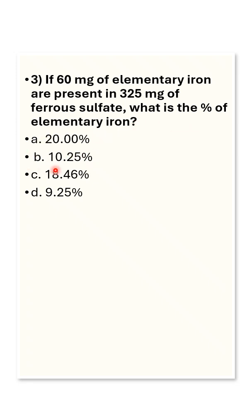The options are 20%, 10.25%, 18.46%, and 9.25%. Elemental iron refers to the pure form of iron that can be ingested and utilized by the body.